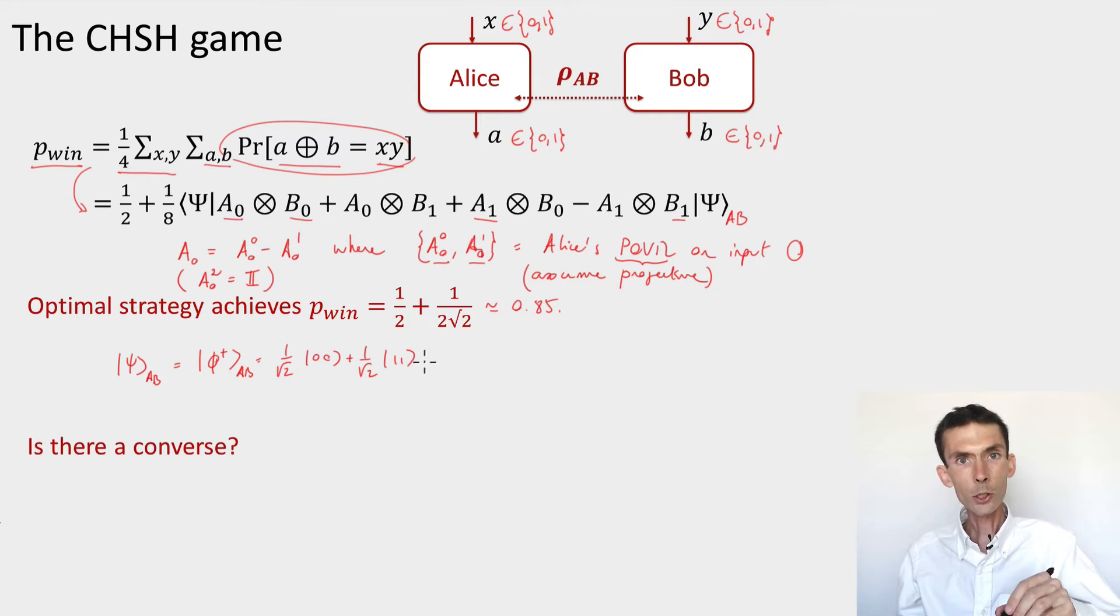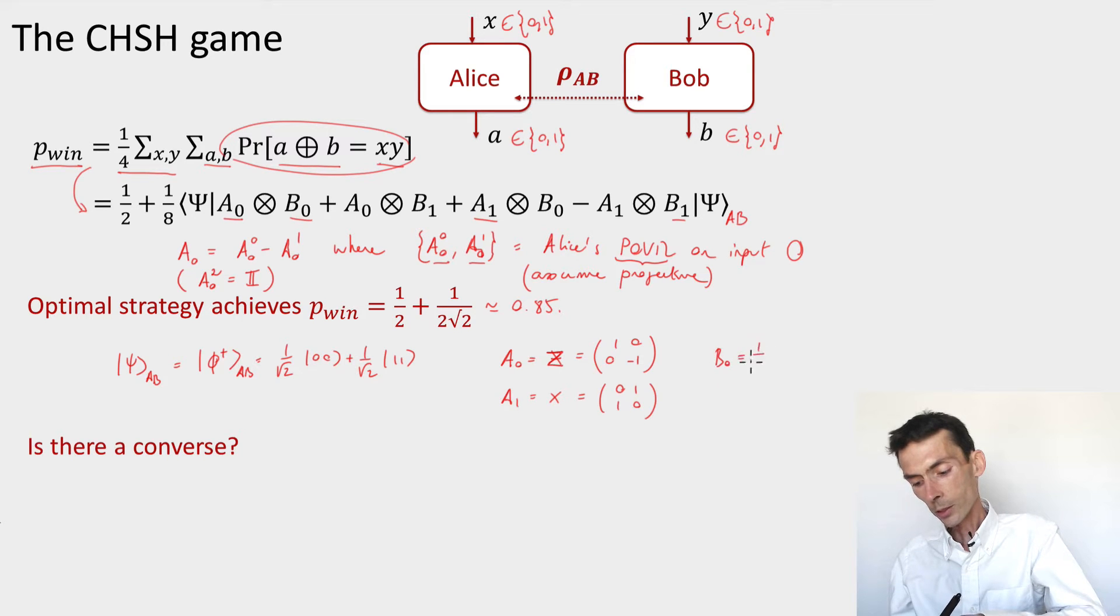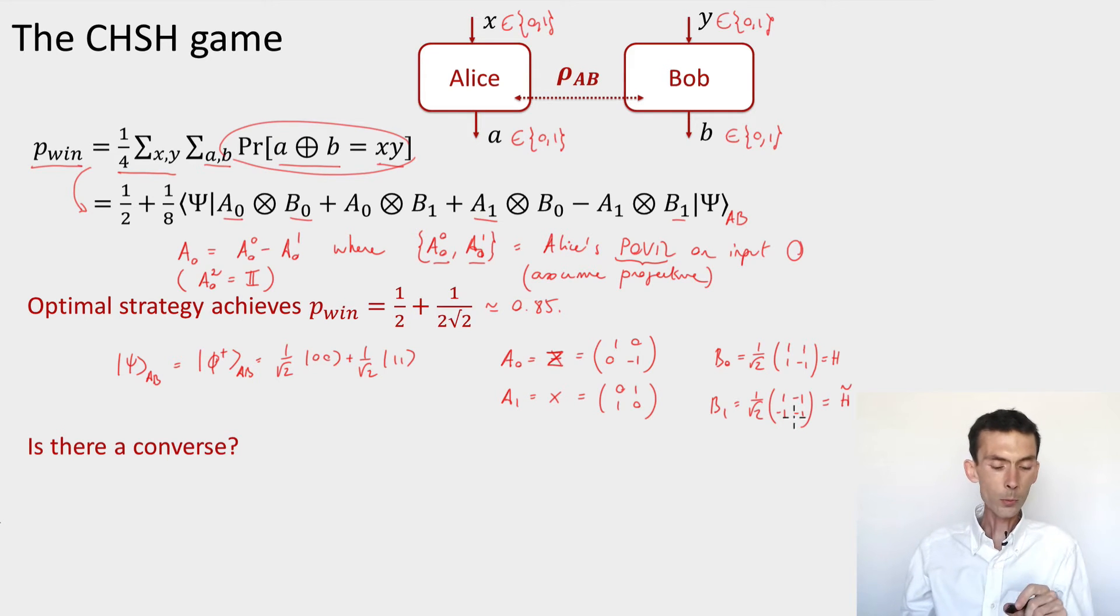You saw that the best classical strategy was equal to three-quarters. You also saw what the optimum quantum strategy is, and you saw that strategy involves using a state psi_AB which is equal to an EPR pair that we'll denote phi^+_AB. For Alice, it corresponded to measuring in the computational basis when her input is 0 and the Hadamard basis when her input is 1. The observables associated with measurements in these bases: A0 is equal to the Z observable, which is just 1, -1. A1 is the X observable, which is equal to 0,1,1,0. Similarly for Bob, the observable is just the Hadamard matrix H. And for B1, I'll call it the flipped Hadamard matrix H-tilde.